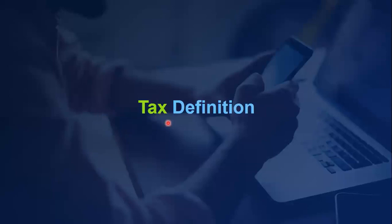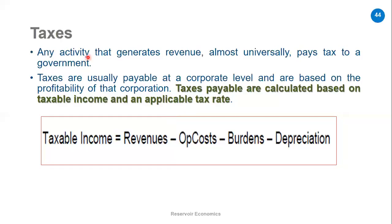We also have tax in our economic model. Any activity that generates revenue must pay taxes to the government. Taxes are usually paid at the corporate level based on the profitability of the corporation. We use the formula: taxable income = revenue minus OPEX minus depreciation of CAPEX minus burden (any cost incurred before the economic evaluation). We then multiply taxable income by the tax rate to calculate our taxes.